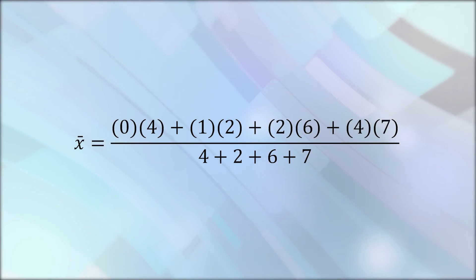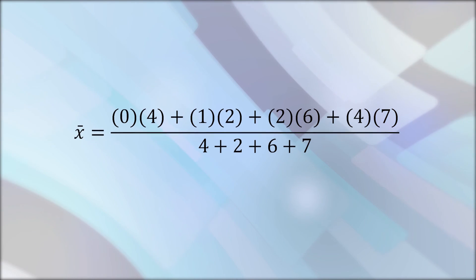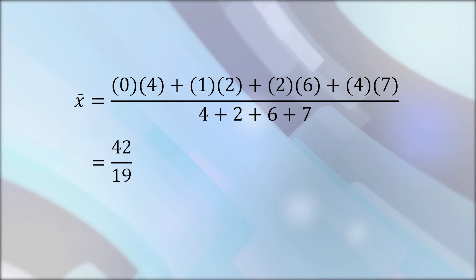By plugging in the values, we get that x-bar equals (0 times 4) plus (1 times 2) plus (2 times 6) plus (4 times 7), over the total mass, that is 4 plus 2 plus 6 plus 7. And the answer is 42 over 19, which is about 2.21.